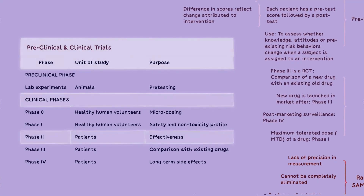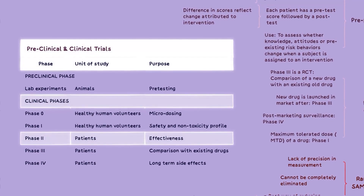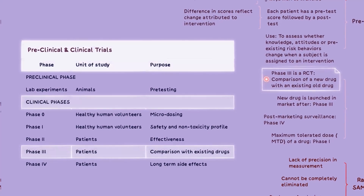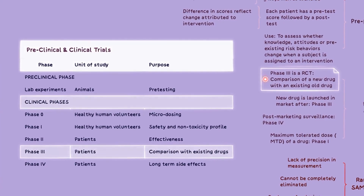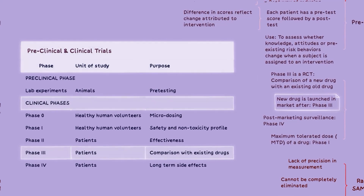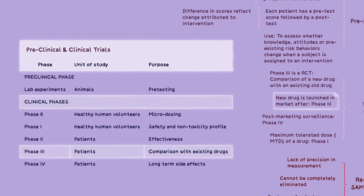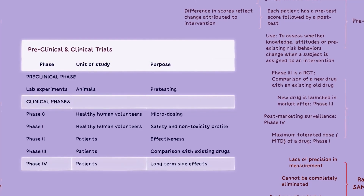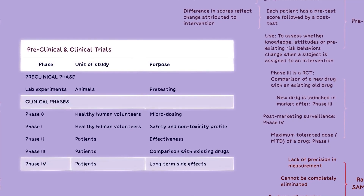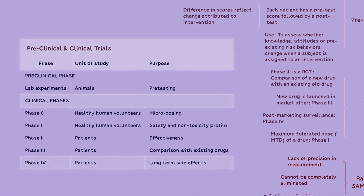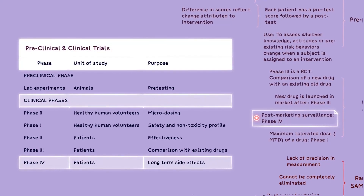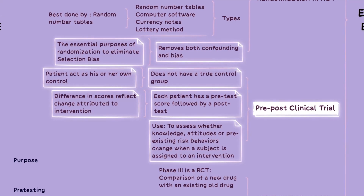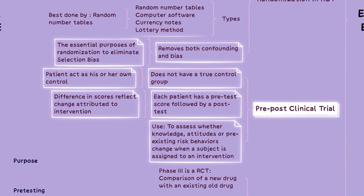Phase 2 involves the study of patients with the target condition or disease for effectiveness. In Phase 3, the drug is studied for comparison with existing drugs, and new drugs are launched in the market after a successful Phase 3. In the final Phase 4, patients taking the drug are evaluated for long-term side effects, also known as post-marketing surveillance. You can take a quick note of some details about pre- and post-clinical trials from the mind map.